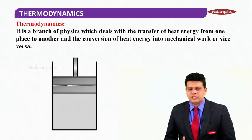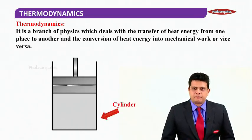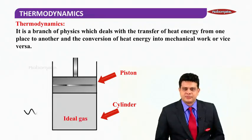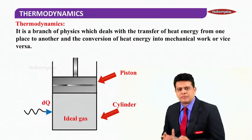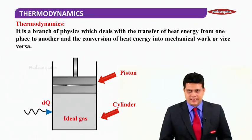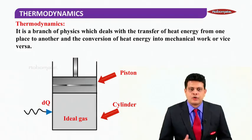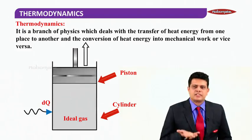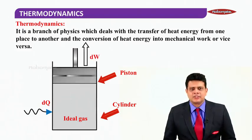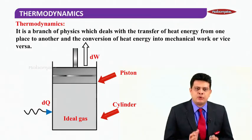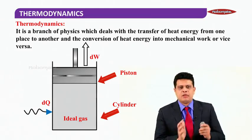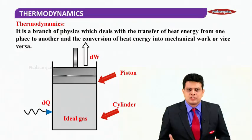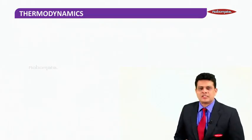Let's see a simple example. I have a cylinder fitted with a piston, which you can see on the screen, and it has ideal gas in it. I supply heat energy — dQ amount of heat energy has been supplied. This heat energy increases the volume of the gas, which pushes the piston upwards, so dW amount of work is done. Heat energy supplied is converted into work — that is what thermodynamics is all about.